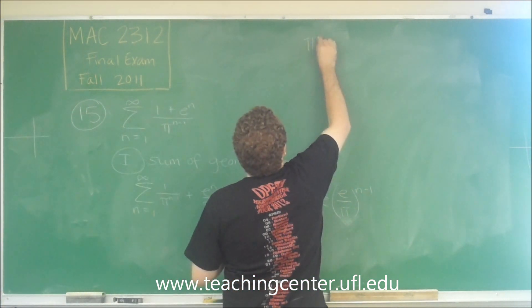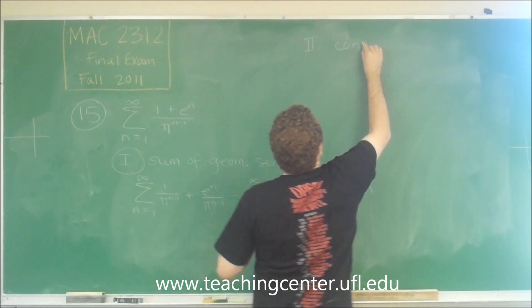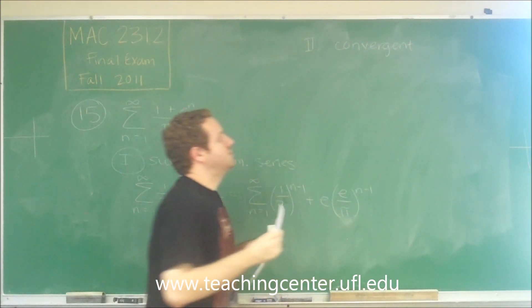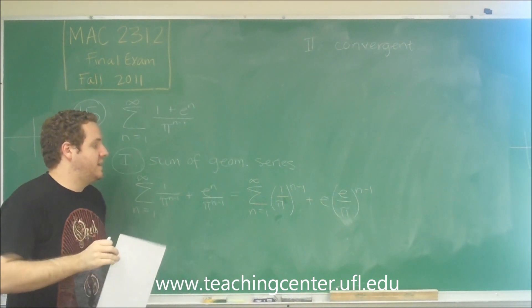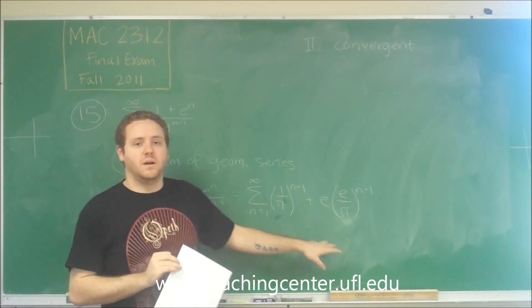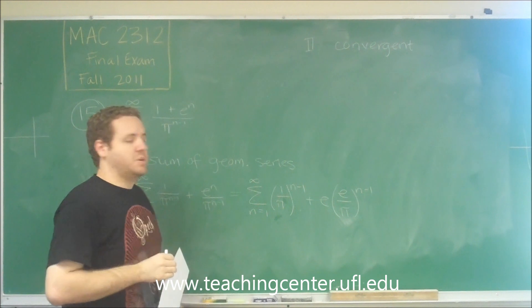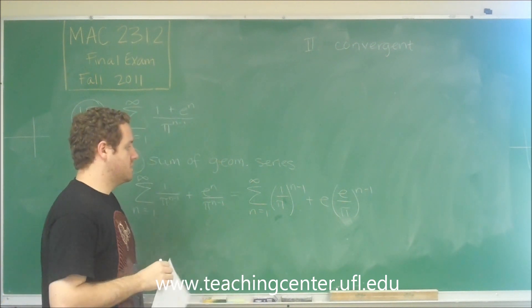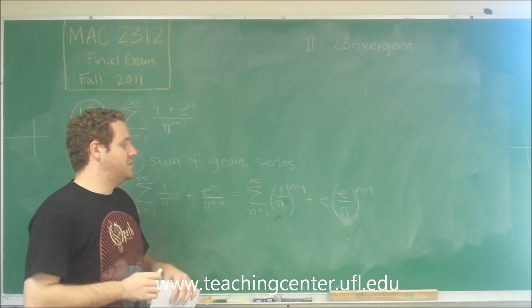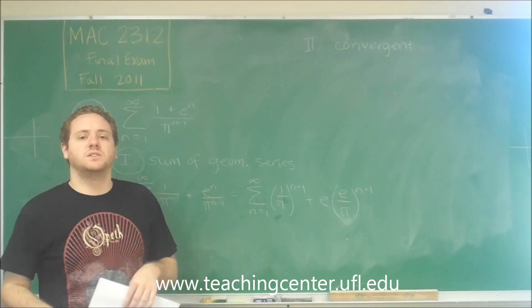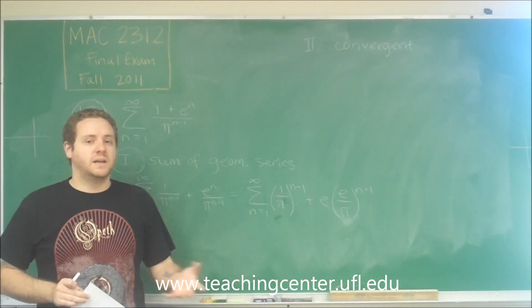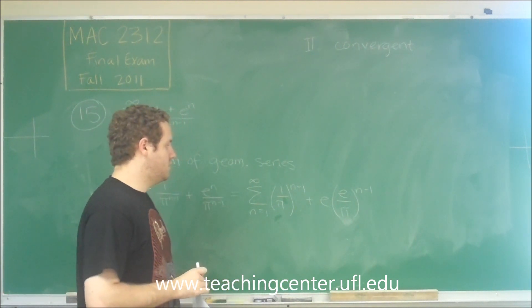Okay, statement two. This series is convergent. Well that is easy to test once we've split it up in this fashion. Because geometric series are really easy to tell whether they're convergent or divergent. So for a geometric series to be convergent, remember the only condition is that the fraction has to be within negative 1 to 1. So let's see if it is.